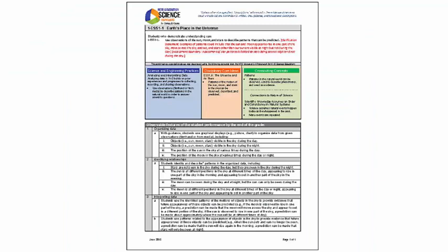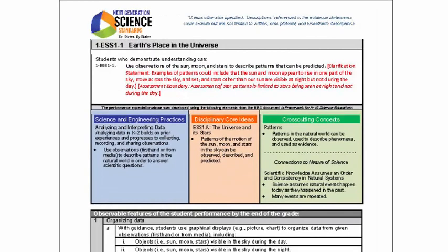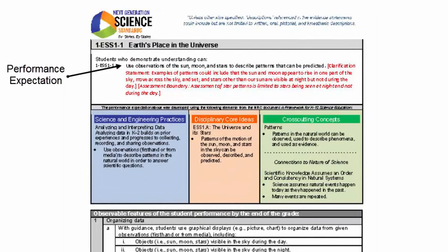Any time you access an NGSS document, whether linked from the Montana Standards or directly through the nextgenscience.org website, you will see a similar layout. The performance expectation is always located in the large upper box in bold font.